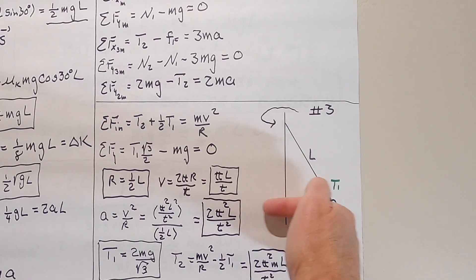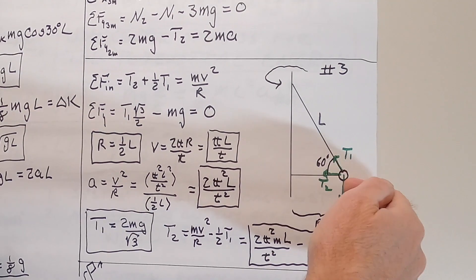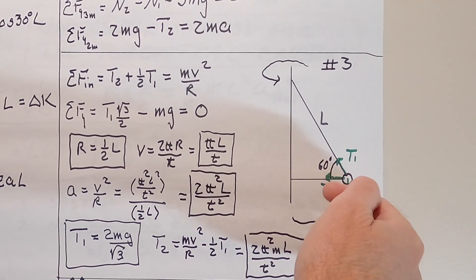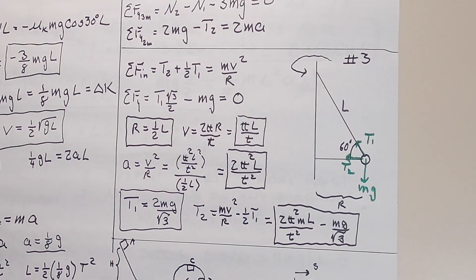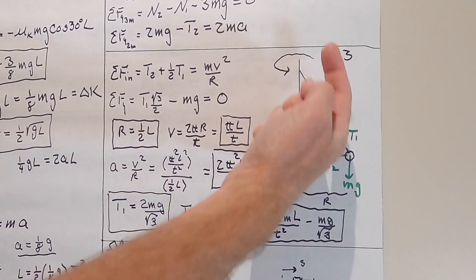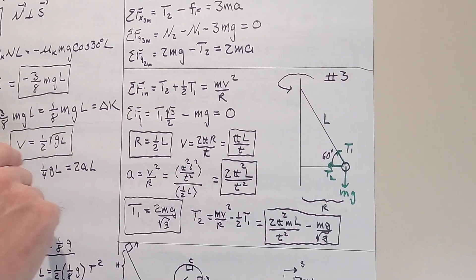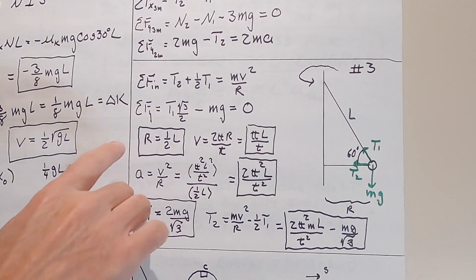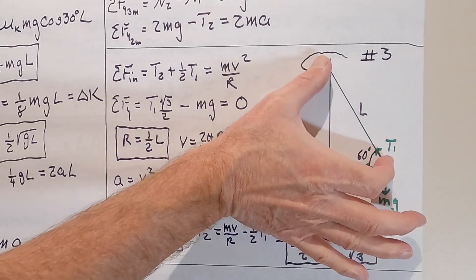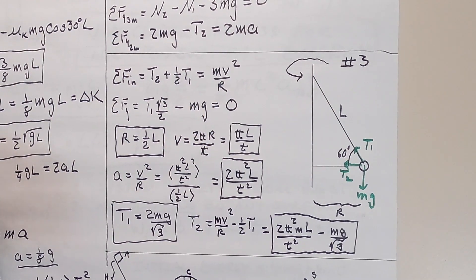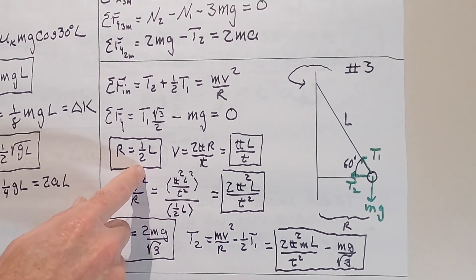We want to put one of our axes toward the center of the circle. We have T2 going inward and the component T1 cosine 60 also going in. Cosine 60 is one half. So T2 plus one half T1 equals mv squared over r, where r is the radius. Then in the y direction: T1 sine 60, which is the square root of 3 over 2, minus mg equals zero. Then I said what is the length of the lower string? The upper string has length l at 60 degrees, so the radius is l cosine 60, which is just one half l.